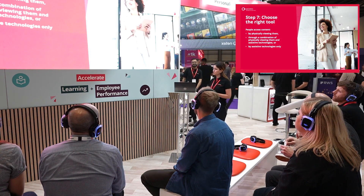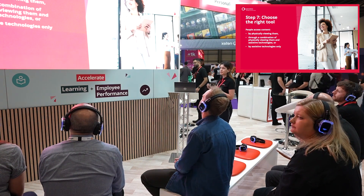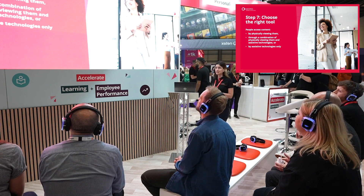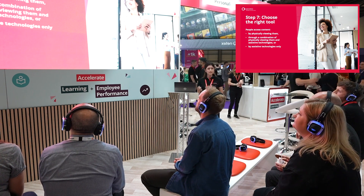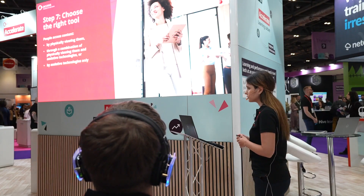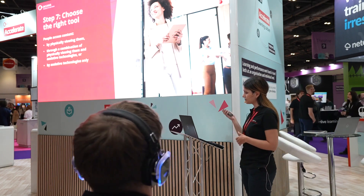Step seven: choose the right tool to build and deliver your content. People may access your content by physically viewing it, through a combination of physical viewing and assistive technologies, or by assistive technologies only. That's why you need to select a tool that is compliant and supports assistive technologies. For some of our recent courses, we've used Articulate Rise and found that it helps keep our content more accessible and mobile-friendly at the same time.